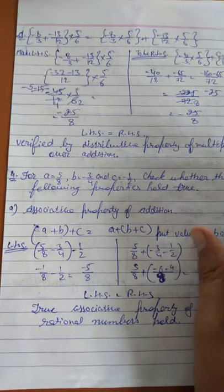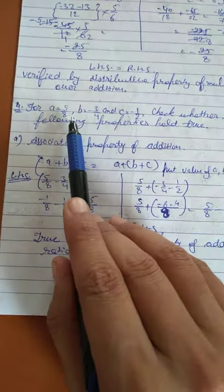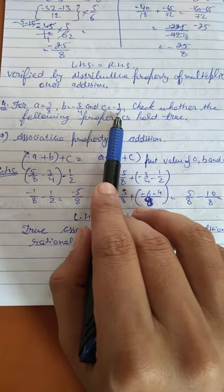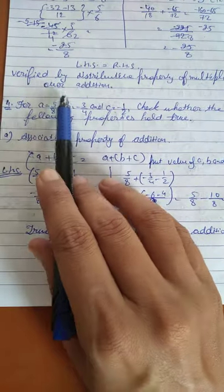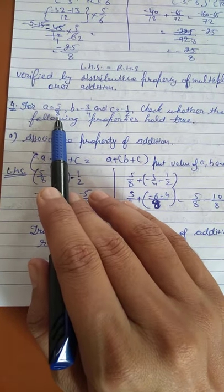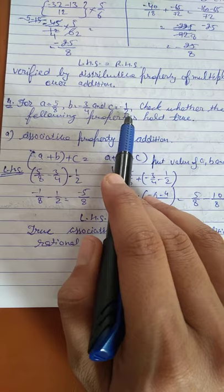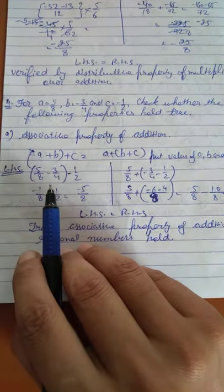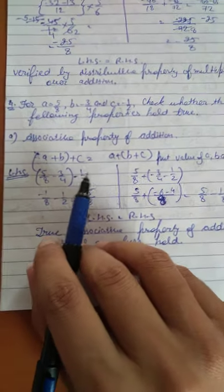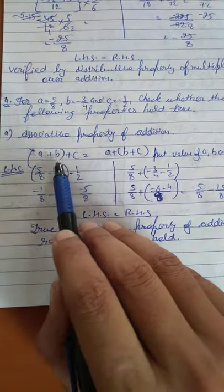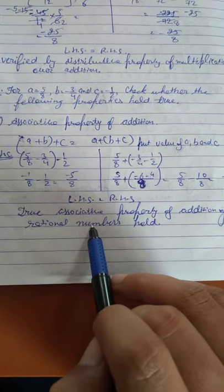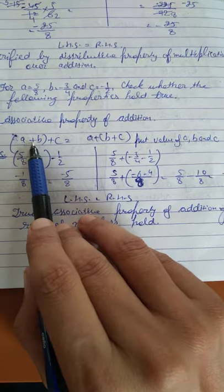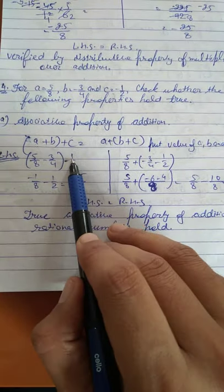Now we move to the fourth sum. We have three rational numbers a, b, and c with assigned values: a = 5 over 8, b = minus 3 over 4, and c = minus 1 over 2. We check whether the properties we discussed in the first lecture hold true, and if so, give the reason.